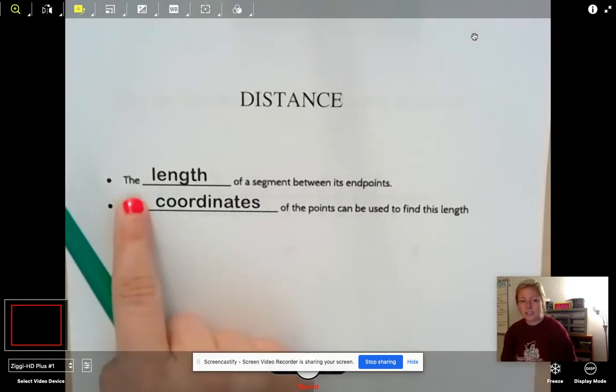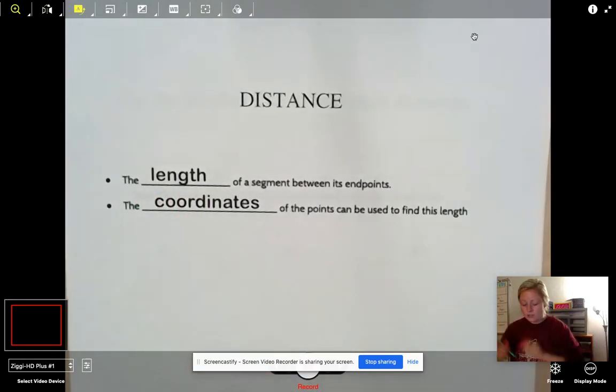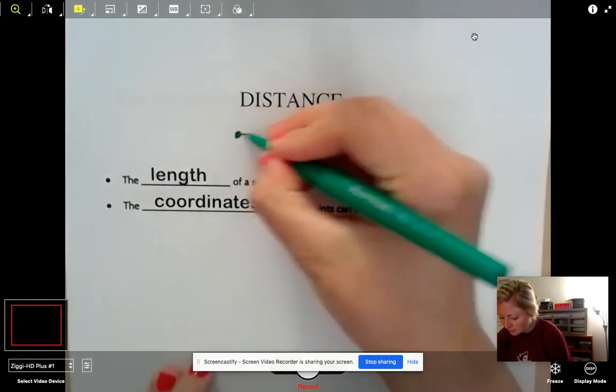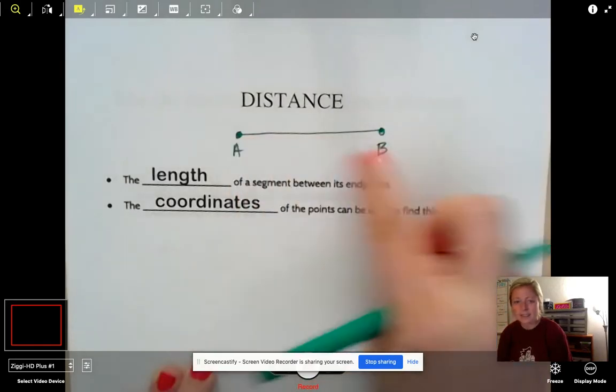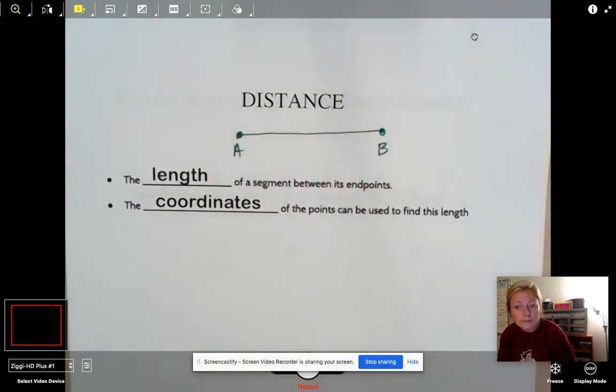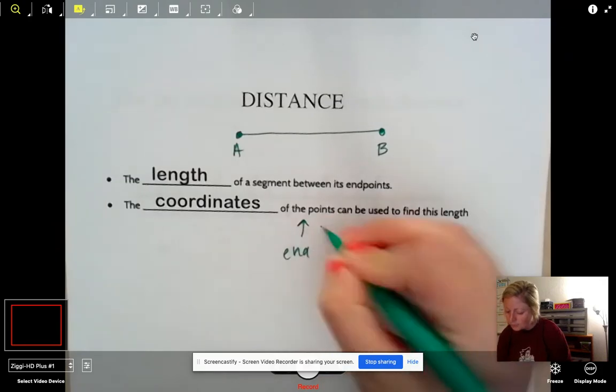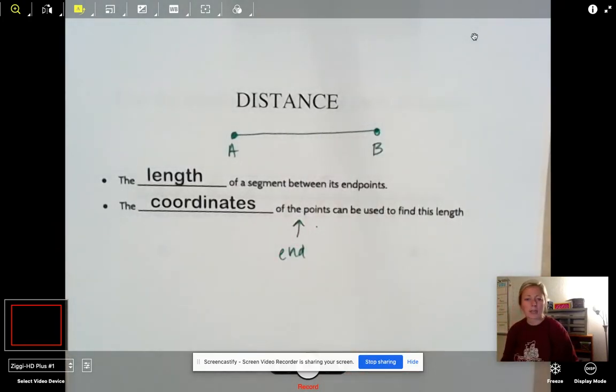Distance is just the length of a segment between its two endpoints. So remember if we had segment AB, the distance of this would be how long it is. Beautiful, right? The coordinates of the endpoints can be used to find this length.